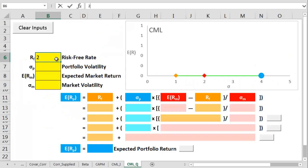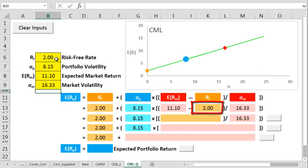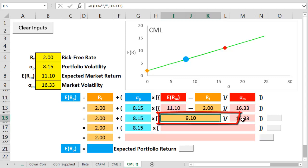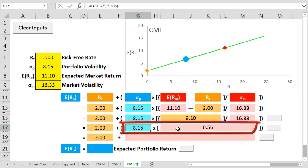So we insert a risk-free rate of 2%, a portfolio risk of 8.15%, then the expected market return of 11.10% and then finally we put in a market risk volatility of 16.33%. We take two from 11.10% to get to 9.10% then we divide 9.10 by 16.33% to get to 0.56%.